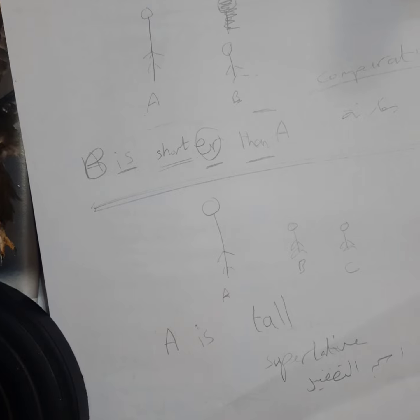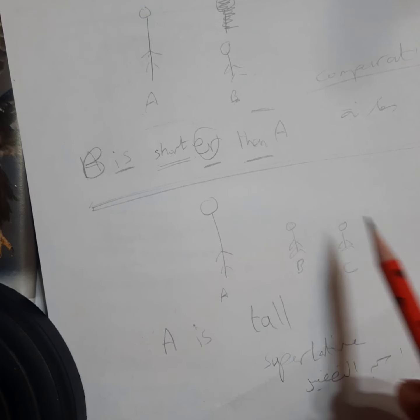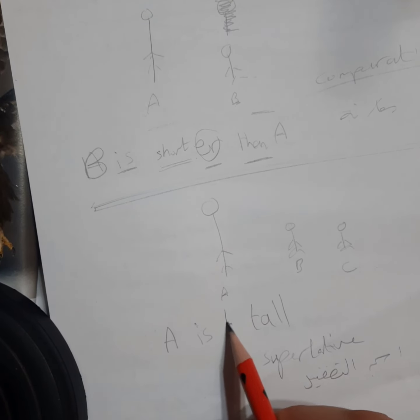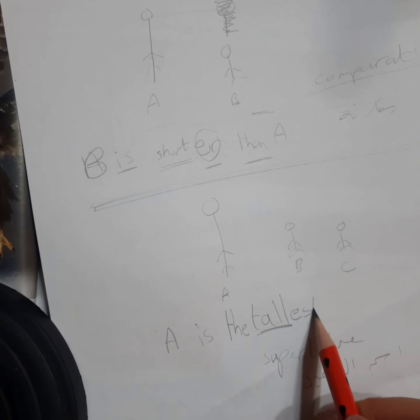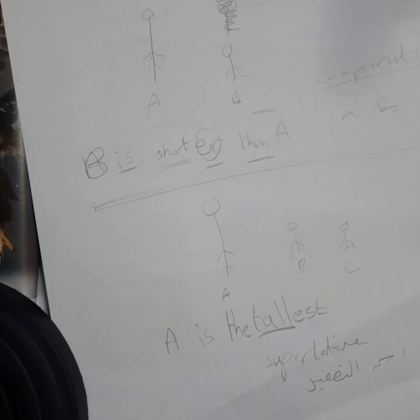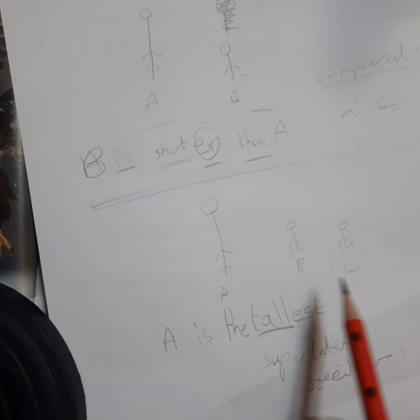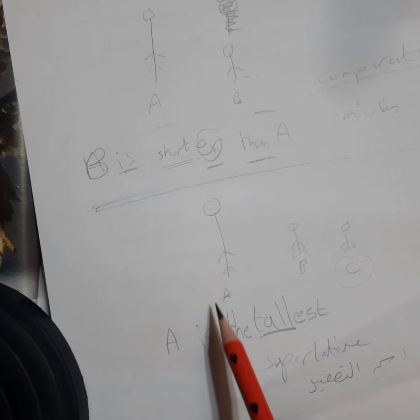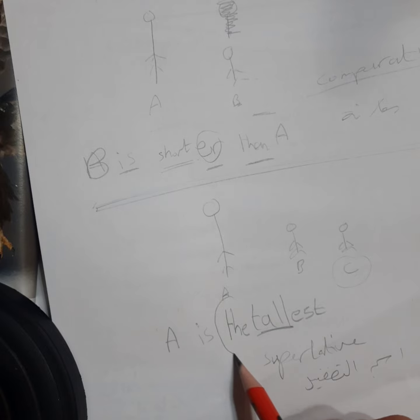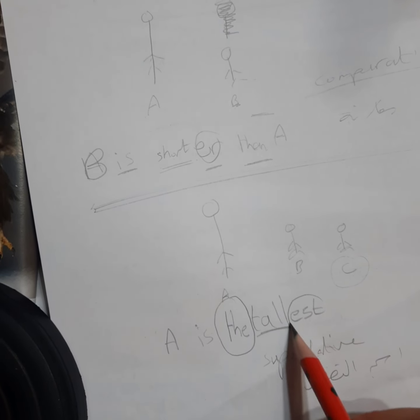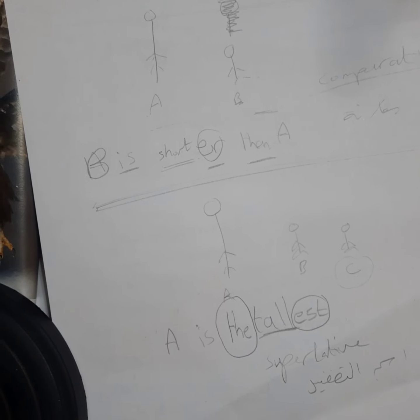For the superlative, if you want to say that A الأطول واحد منهم جميعا, which is true as you can see from this picture, you say that A is the tallest. بس بتحطو لكلمة the والطول بتحطو لها EST, so it becomes A is the tallest. ممكن كمان أحكي بطريقة أخرى إنه C هو الأقصر as you can see from this picture, that C is the shortest. إذا اسم التفضيل يتم من خلال إضافة كلمة the بالإضافة إلى EST لما نضيفها نحنا على الadjective. إذا هذا هو درسنا لليوم.